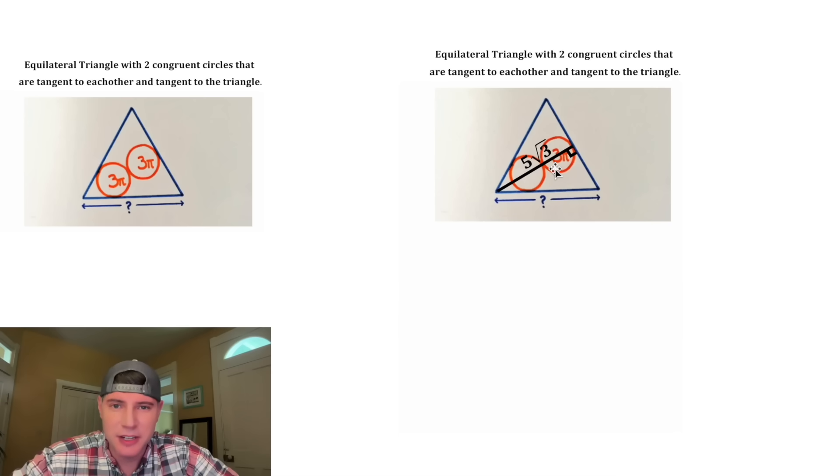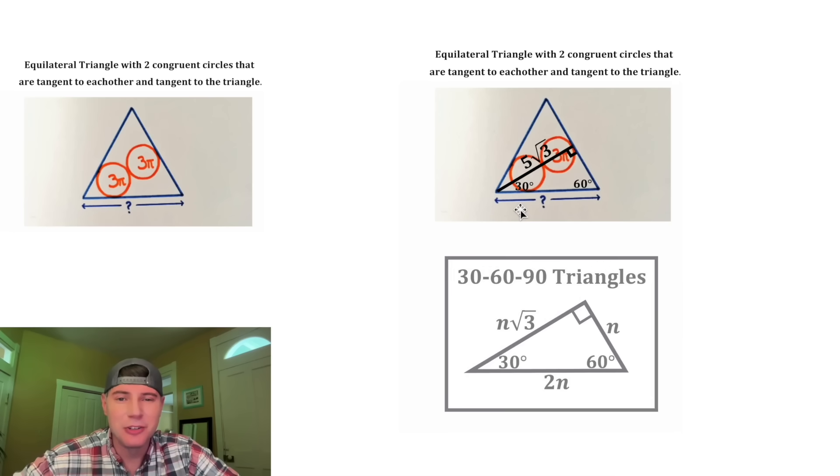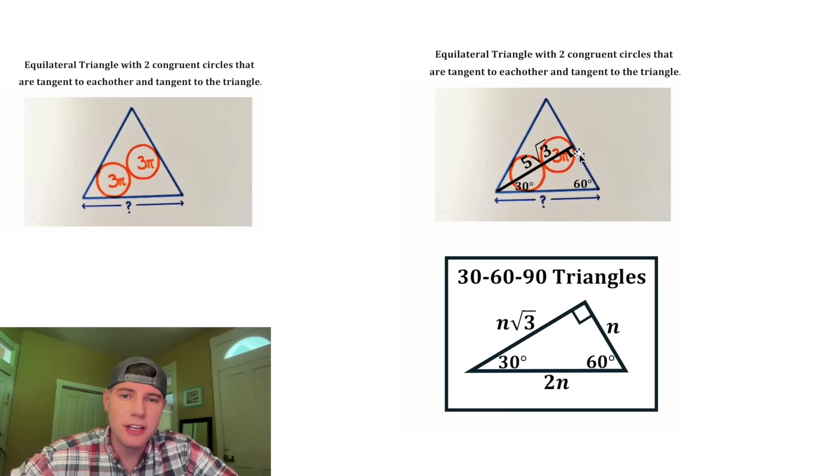Now this is a right angle because the radius will meet the tangent line at a right angle. And this is 60 degrees because it's an equilateral triangle. That makes the last angle of this triangle 30 degrees. And now we can use the notes for 30-60-90 triangles. The side opposite the 30 is equal to n, and the side opposite the 60 is equal to n root 3, and the side opposite the 90 is equal to 2n.